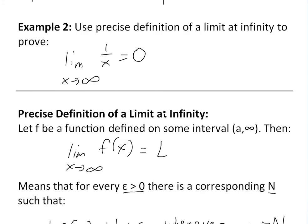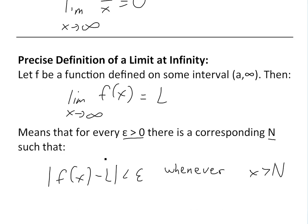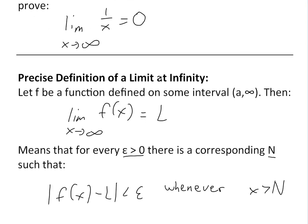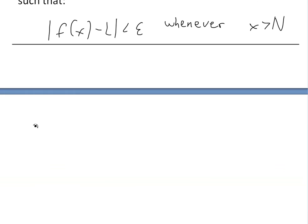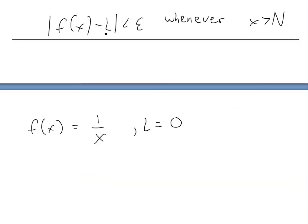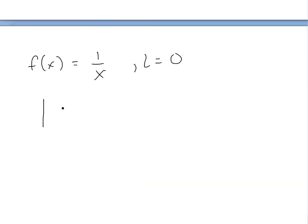Now to prove this using the precise definition, let's write it in terms of this definition. In this case, f(x) is 1 over x and the limit L is zero. So we need to show that the absolute value of 1 over x minus 0 is less than epsilon whenever x is greater than N.